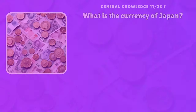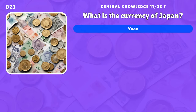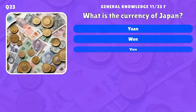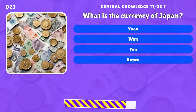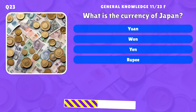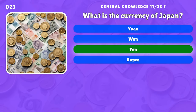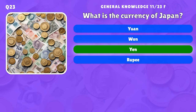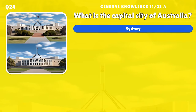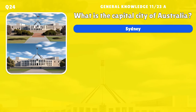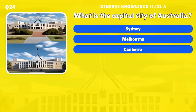What is the currency of Japan? A) Yuan, B) Yuan, C) Rupee. What is the capital city of Australia? A) Sydney, B) Melbourne, C) Canberra, D) Brisbane.